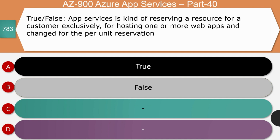Next question — true or false: App Services is a kind of reserving a resource for a customer exclusively for hosting one or more web apps, and they are charged per unit reservation. The first portion is true — it does host one or more apps. However, the per-unit reservation charging is false. App Services are charged based on a pay-as-you-go model, so the right answer is false.